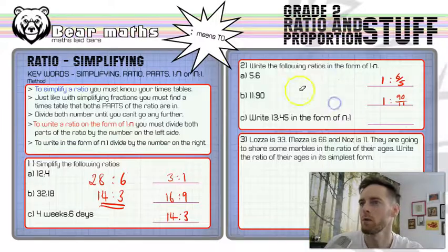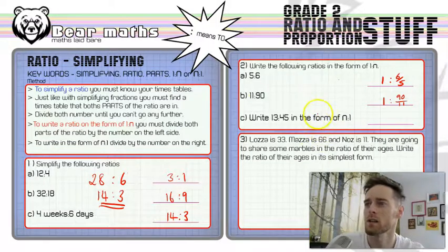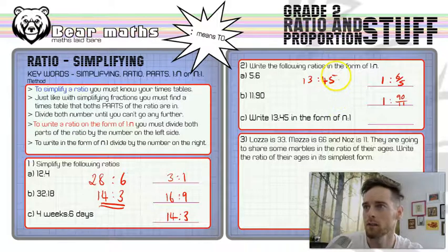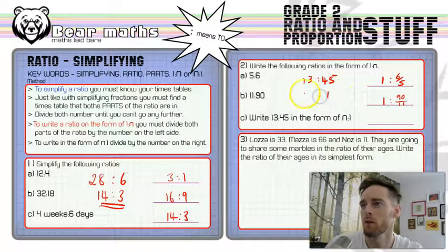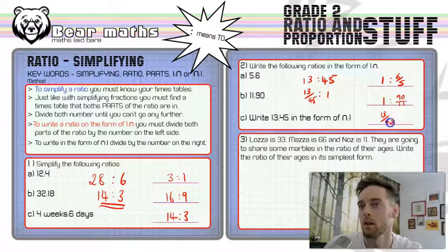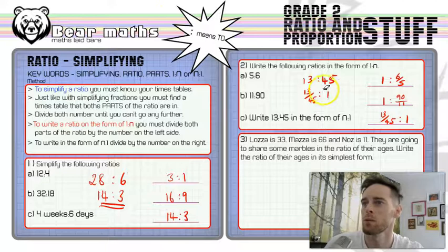The last part of question two: write 13 to 45 in the form n to 1. The right-hand side is the side we want to be 1, so we divide both parts by 45. That gives us 13 over 45 on the left and 1 on the right. The answer is thirteen forty-fifths to 1. It really is that simple — no need to make it any more complicated.